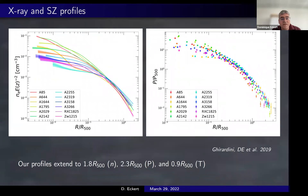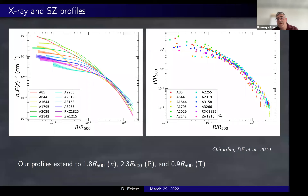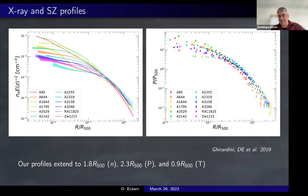Putting those two observables together, we can first extract gas density profiles from X-ray observations after properly removing substructures and clumps. We then construct pressure profiles from the SZ observations, complementing the innermost regions — where we lack SZ resolution — with spectroscopic temperature profiles from X-ray directly. We end up with very detailed measurements of both pressure profiles and gas density profiles, allowing us to reconstruct mass profiles with good precision.